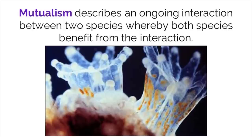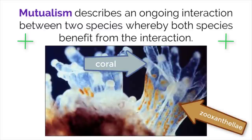A mutualistic relationship is one where both organisms benefit from the interaction. The example in this image is zooxanthellae and coral. Zooxanthellae is a species of unicellular algae that is photosynthetic, depicted as the small orange dots in the image. The algae live within the coral polyps, which provide it with protection and a source of inorganic molecules like carbon dioxide so it can undergo photosynthesis. In turn, the algae provide the coral with oxygen, glucose, and other organic molecules produced through photosynthesis. Both organisms benefit from the interaction, which describes the relationship as being mutualistic.